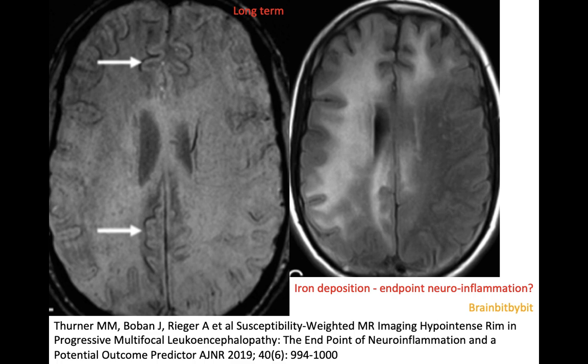PML occurs in immunocompromised patients, initially in patients with HIV, but with more immunosuppressants and immunomodulators, also in patients with rheumatoid diseases and multiple sclerosis. Multiple sclerosis can also affect the subcortical U-fibers, so if you see this low signal on SWI, you know that it's PML and not multiple sclerosis itself.